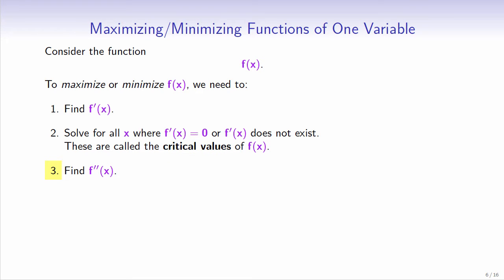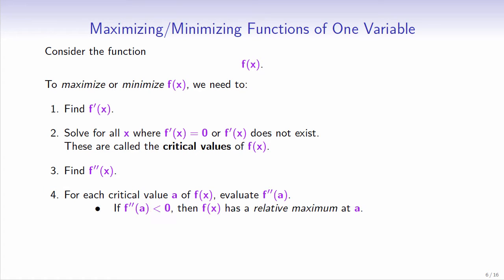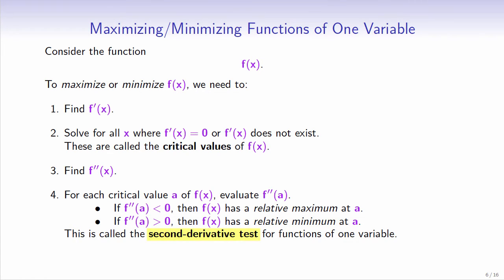Step 3: find the second derivative of f. Step 4: evaluate the second derivative of f at each critical value. If the second derivative is negative, then f has a relative maximum at that point. If it is positive, then f has a relative minimum at that point. This is called the second derivative test. If you are more familiar with the first derivative test, then feel free to use it instead.